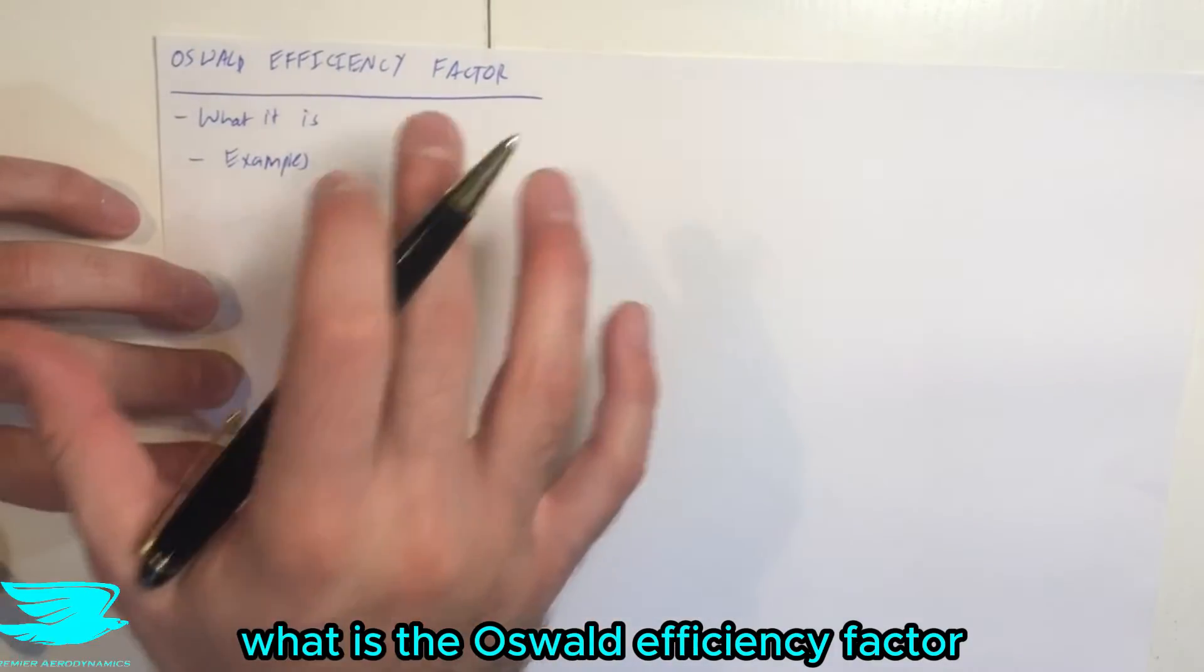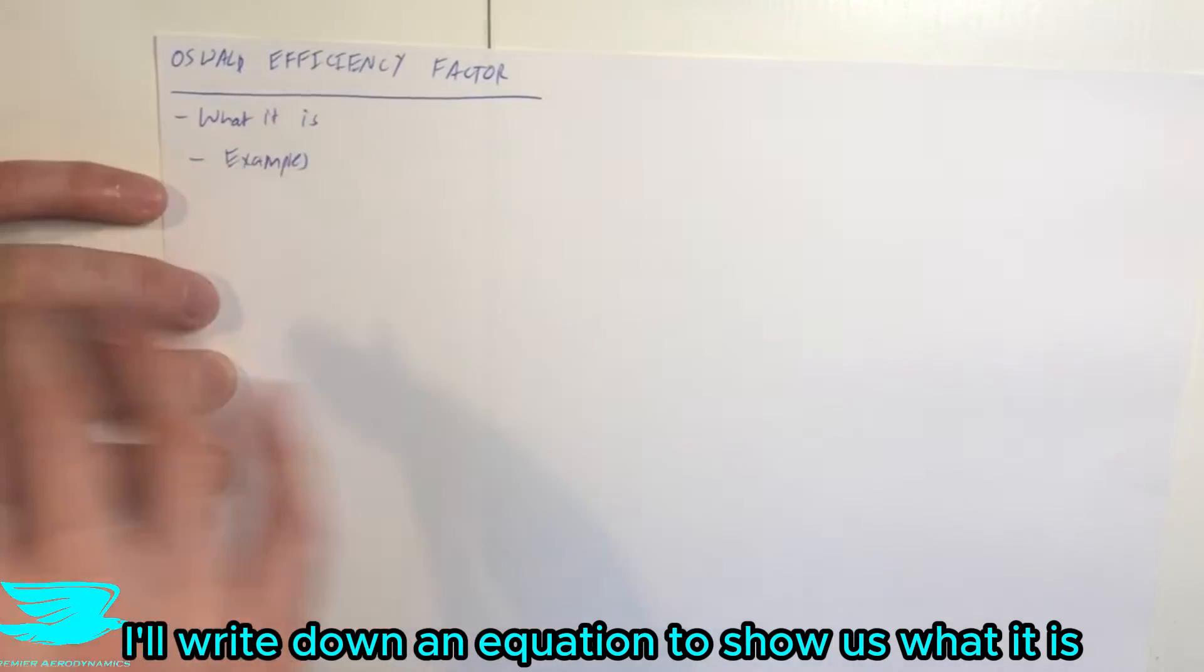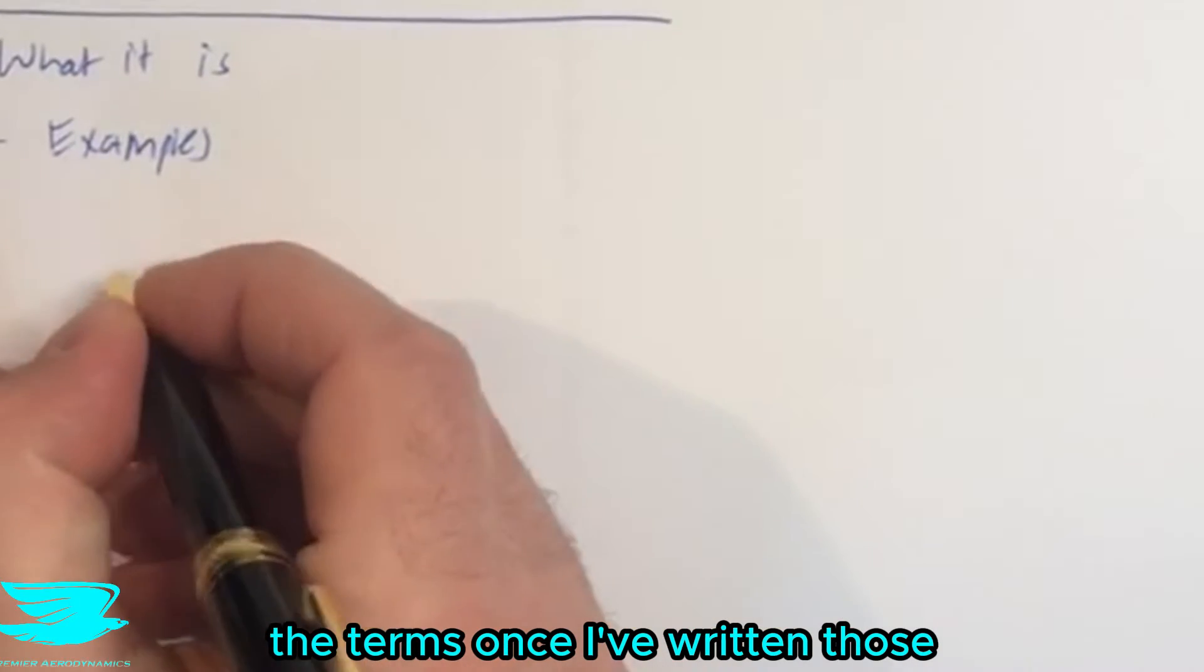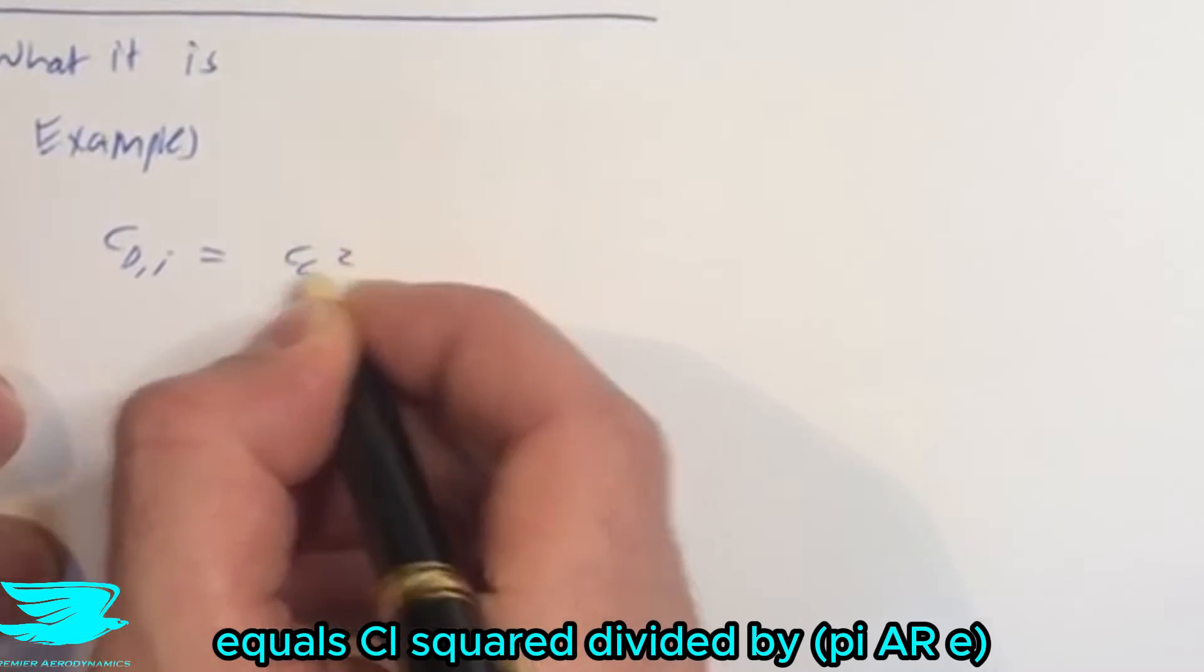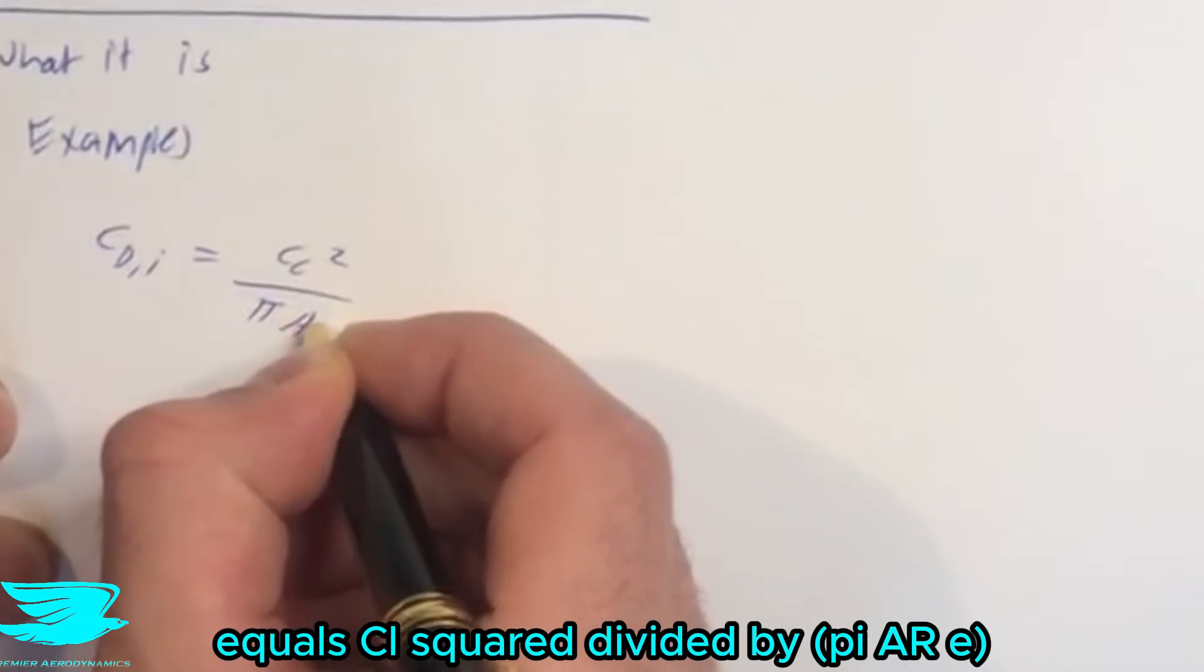So first of all, what is the Oswald Efficiency Factor? Well, I'll write down an equation to show us what it is and I'll explain the terms once I've written them. So, CDI equals CL squared divided by pi AR E.